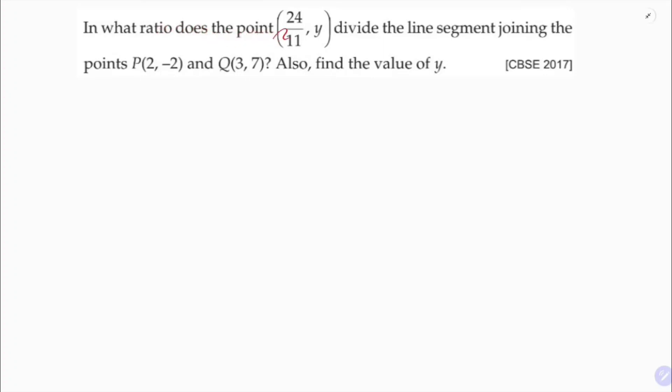In what ratio does the point 24 by 11 comma y divide the line segment joining the points P(2, -2) and Q(3, 7)? Also, find the value of y. So here clearly, the point 24 by 11 comma y divides the line segment joining the points P and Q.